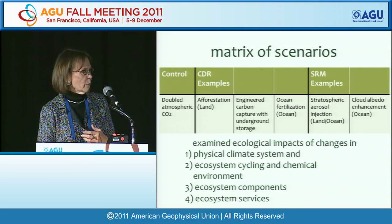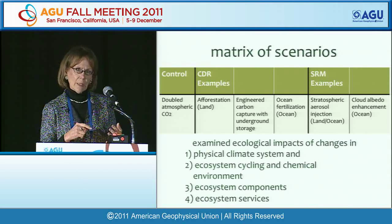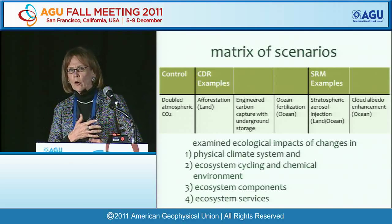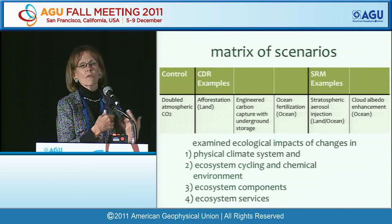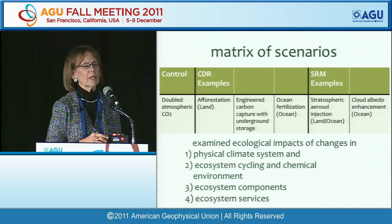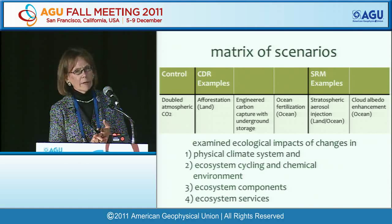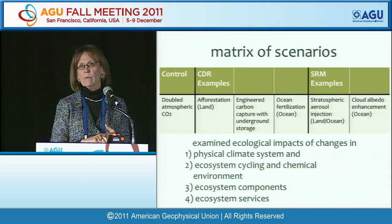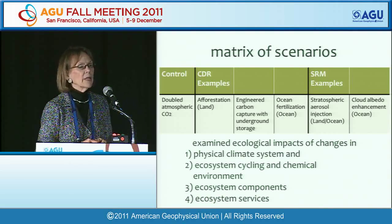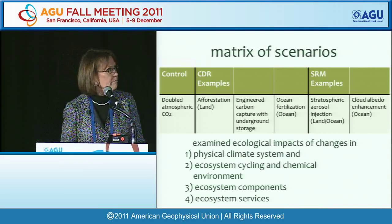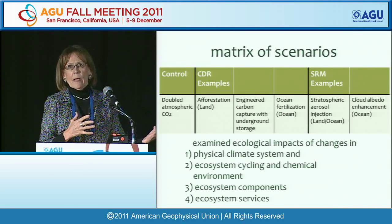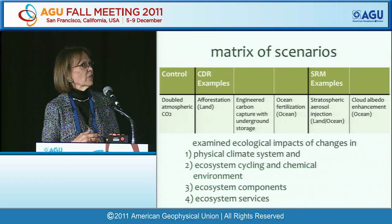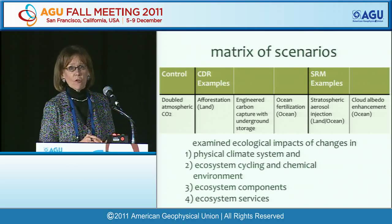For each technique, we examined ecological impacts of changes from the physical climate system — how temperature changes reverberate into ecosystems, ecosystem cycling and chemical environment, ecosystem components like productivity and biomass, and ecosystem services. Each technique was compared to that non-geoengineered future, not to current conditions. That generated a very substantial amount of information which constitutes most of the workshop report.